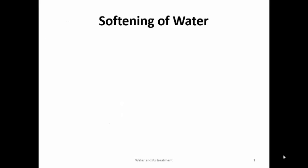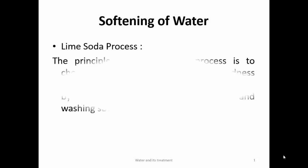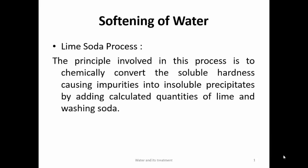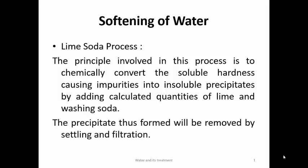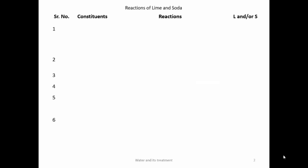Next is softening of water. The first process is the lime-soda process. The principle is to convert soluble hardness-causing impurities into insoluble precipitates by adding calculated quantities of lime and washing soda. The precipitate formed is removed by filtration, and the hardness-causing impurities are thus removed from water. Before going to the process, we have to understand the reactions which occur when lime and soda are added.